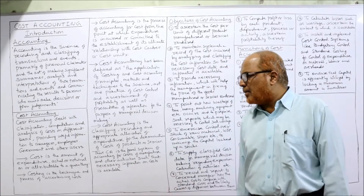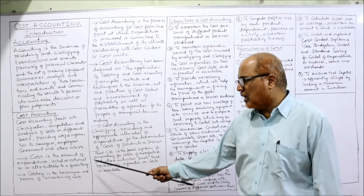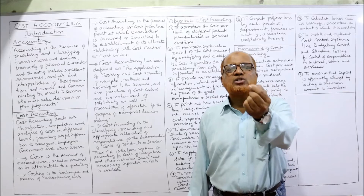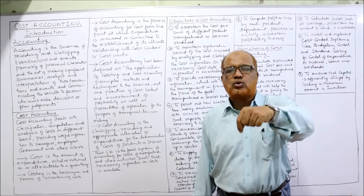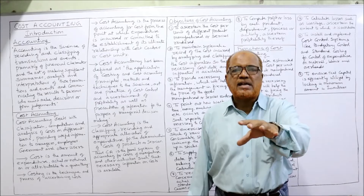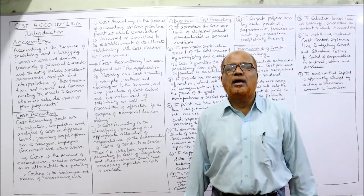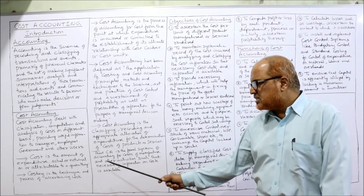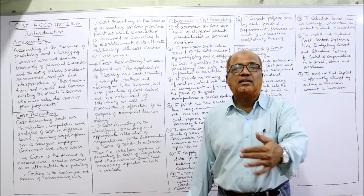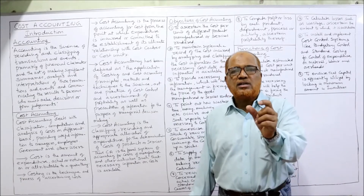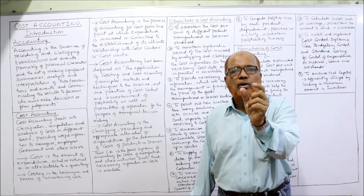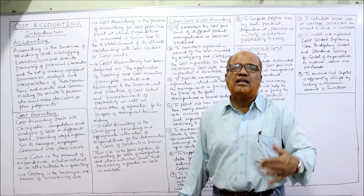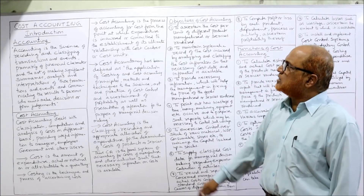Cost is the amount of expenditure — actual or notional — on or attributable to a given thing. Simply put, cost means the expenditure incurred, whether actual or notional, which is attributable to producing a particular product. Costing is the technical process of ascertaining the cost — its scope is very narrow. Costing simply means finding out or calculating the cost.